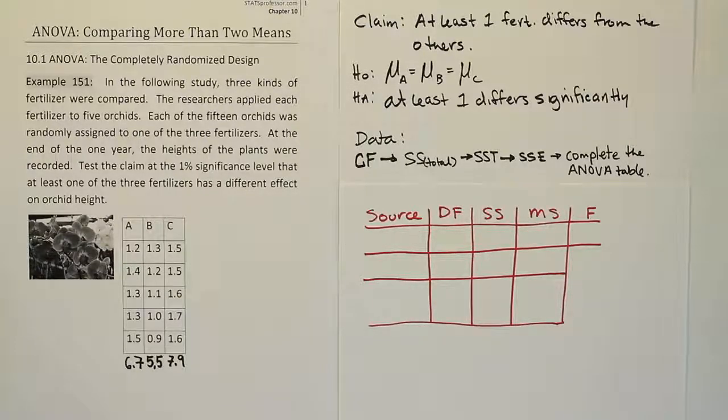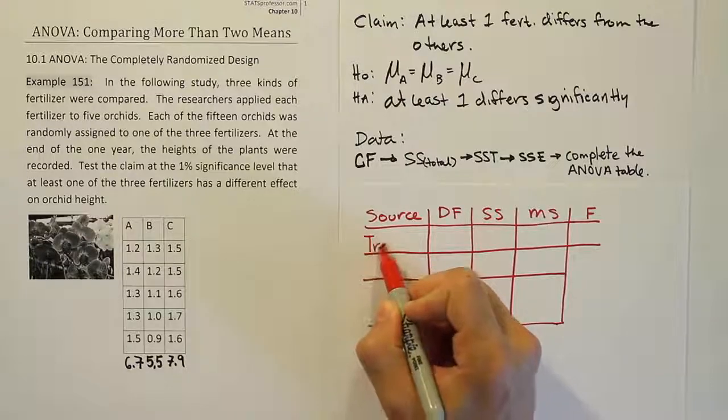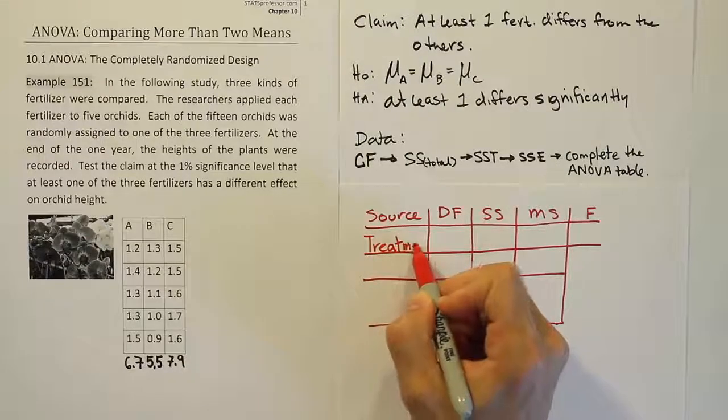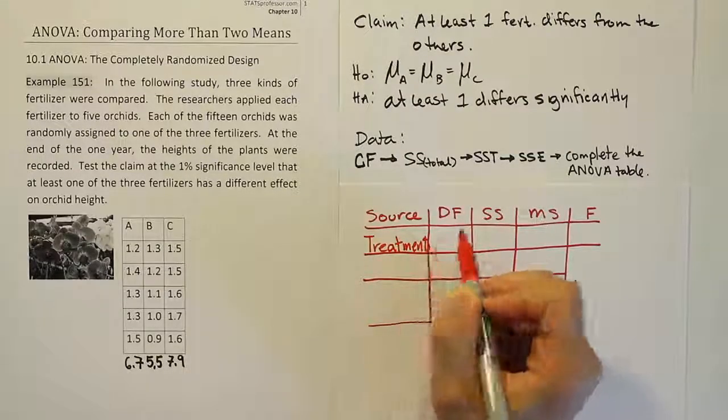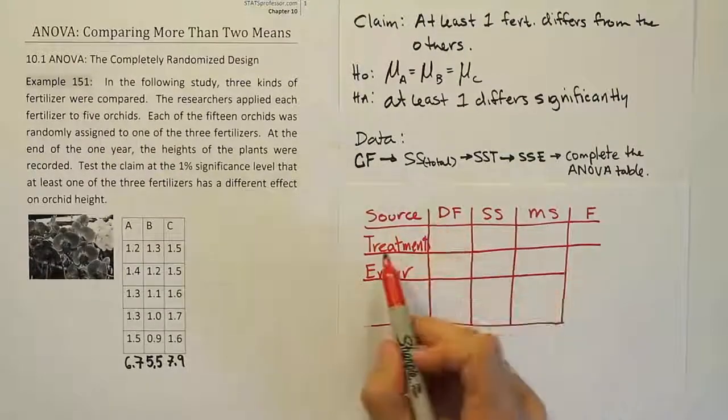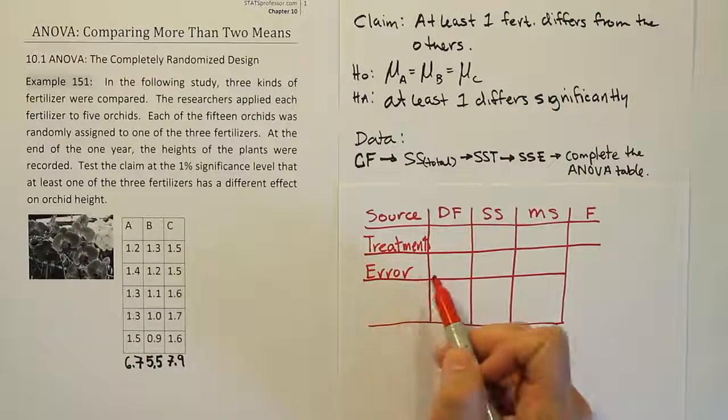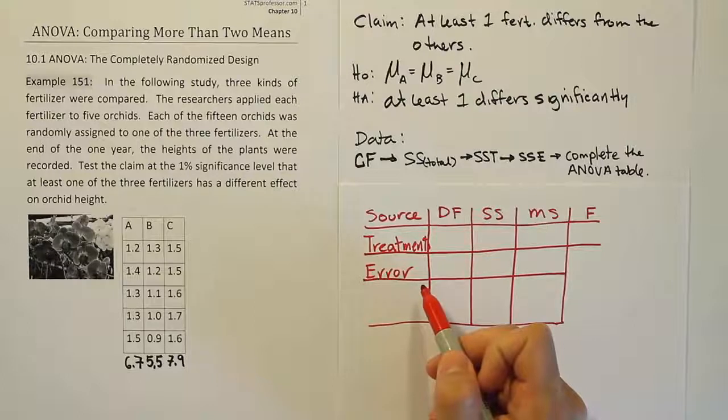In other words, what causes differences or variation in the data. And so in this model, it's very simple. We're going to say that there are treatments, and there is error. So in this case, our treatments are our fertilizer, right? And the error is just everything else that could affect the height of the orchids, like the water, the temperature, the air quality,